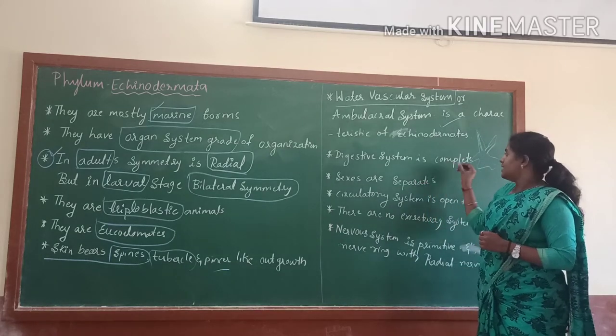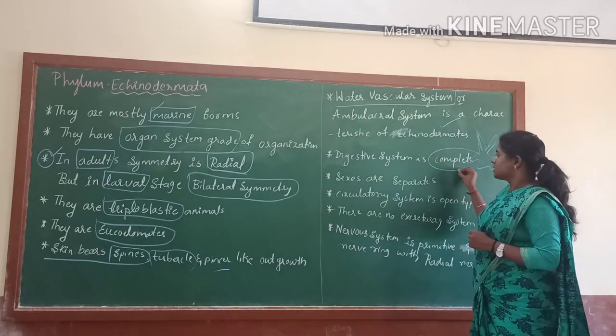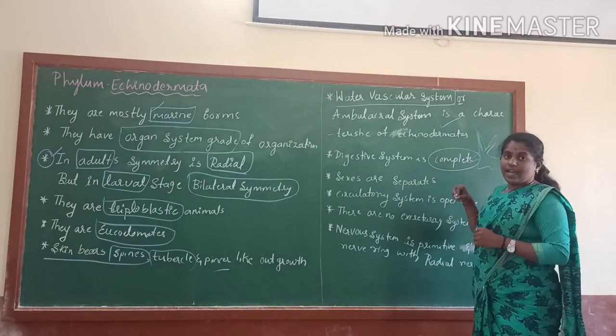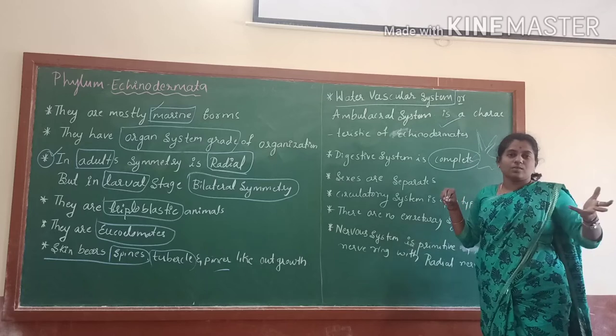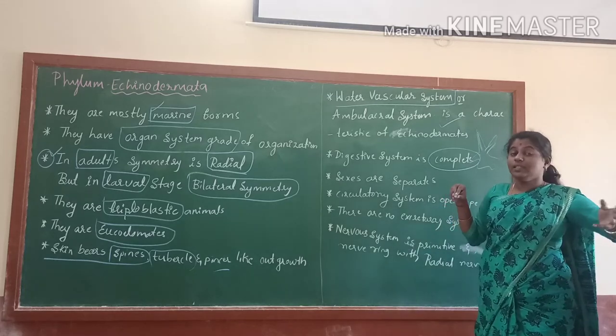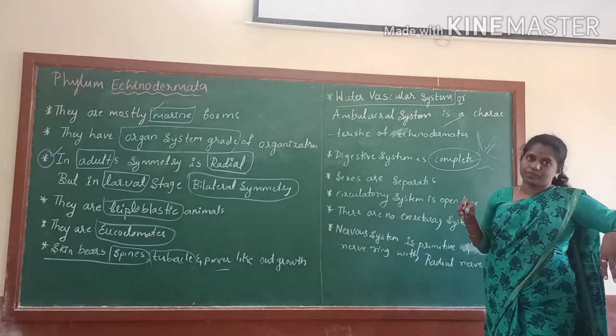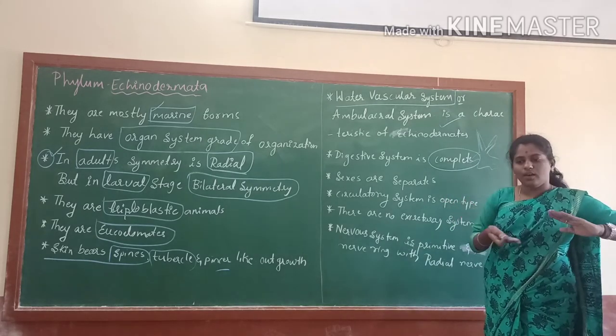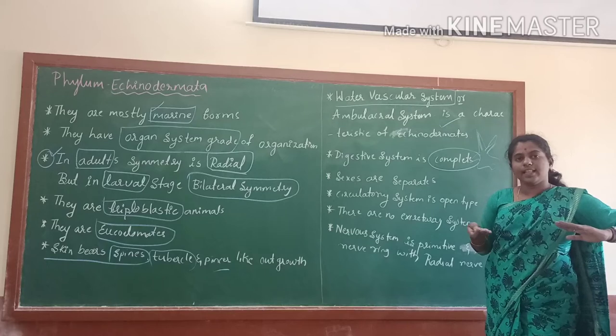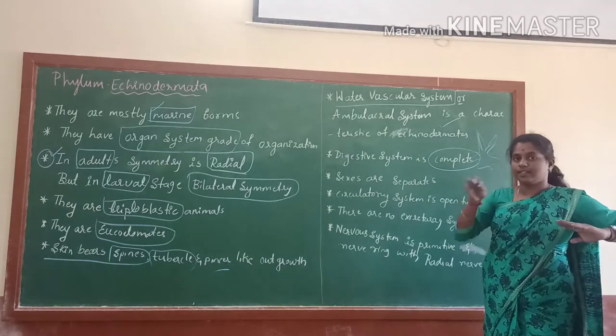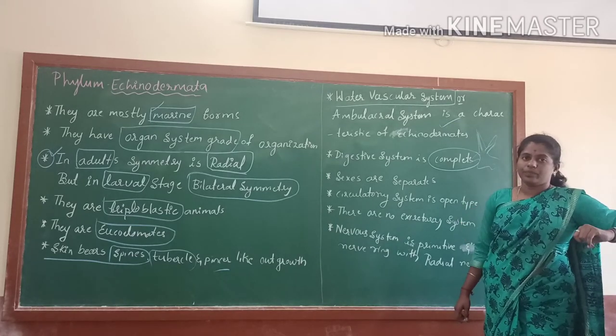The digestive system is complete. They consist of mouth at the ventral side — you can find the mouth on the lower side — and the anus is on the upper side.